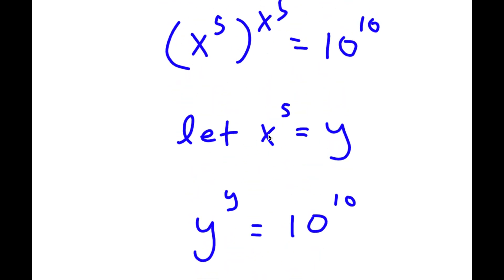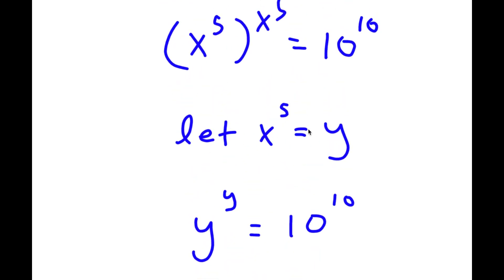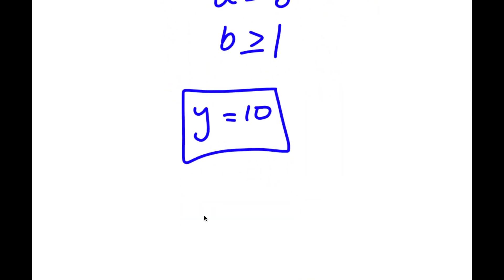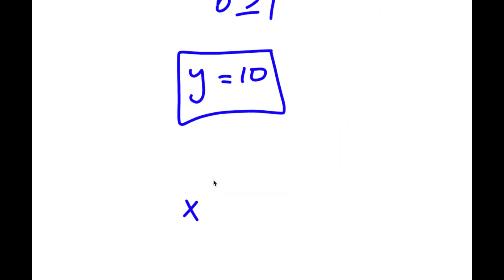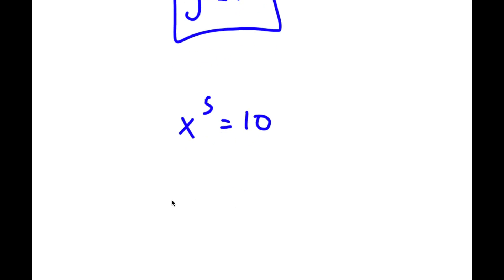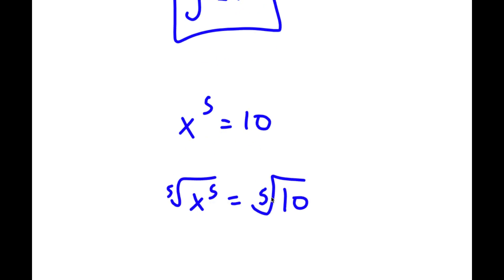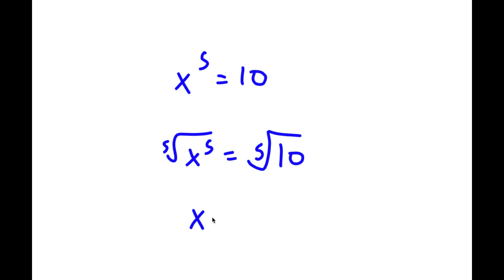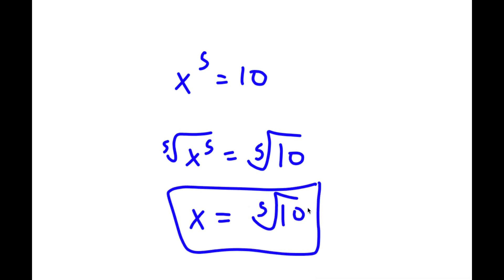Remember, we set x to the power of 5 equal to y. So now I have x to the power of 5 equals 10. Taking the fifth root on both sides, the fifth root of x to the power of 5 is x, so I have x equals the fifth root of 10. So this is my answer.